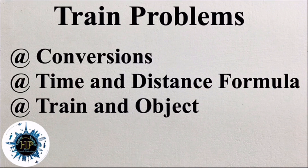In train problems, we are discussing three things. First is conversion — we need to convert kilometer per hour to meter per second, and sometimes vice-versa, meter per second to kilometer per hour. Sometimes hours into seconds. Second is the time and distance formula. There is a formula regarding time, distance, and speed, and based on that formula we solve all the questions.